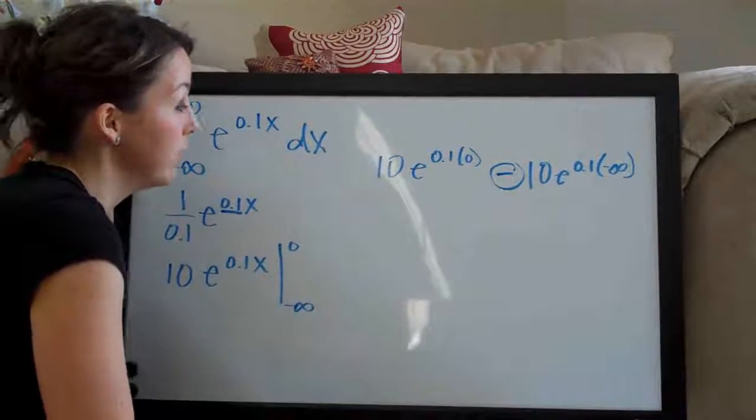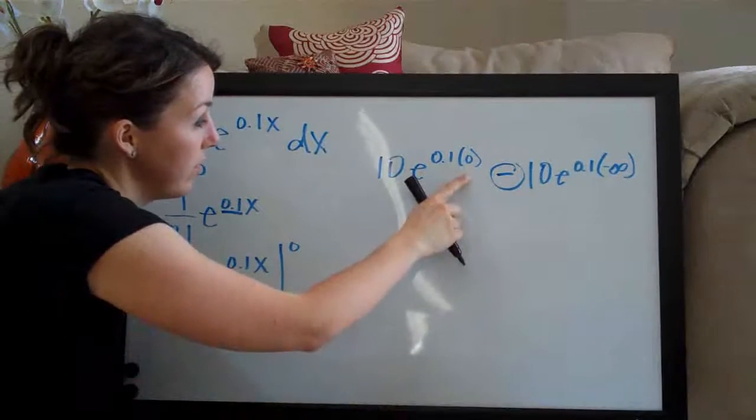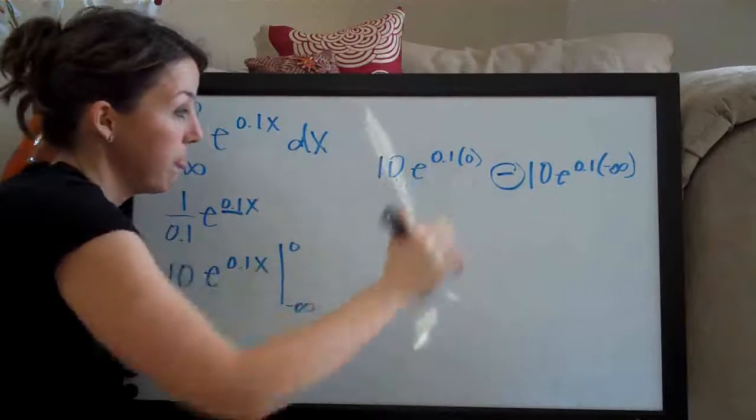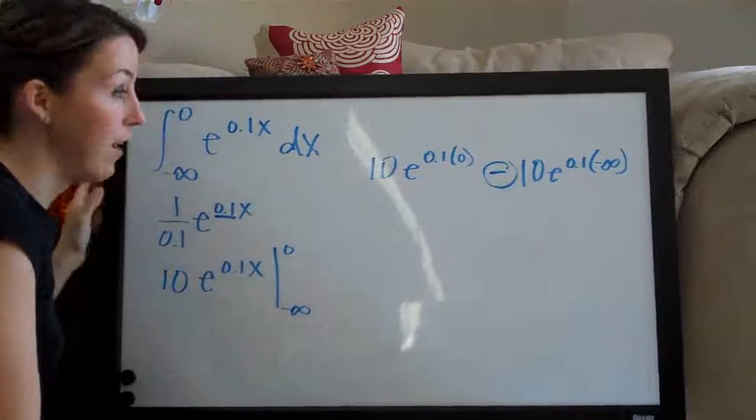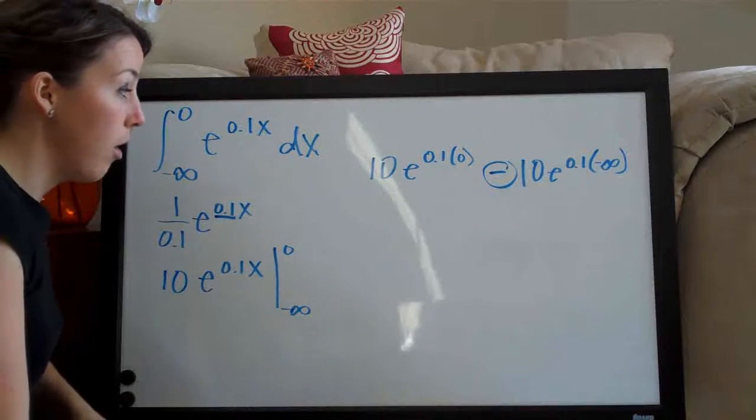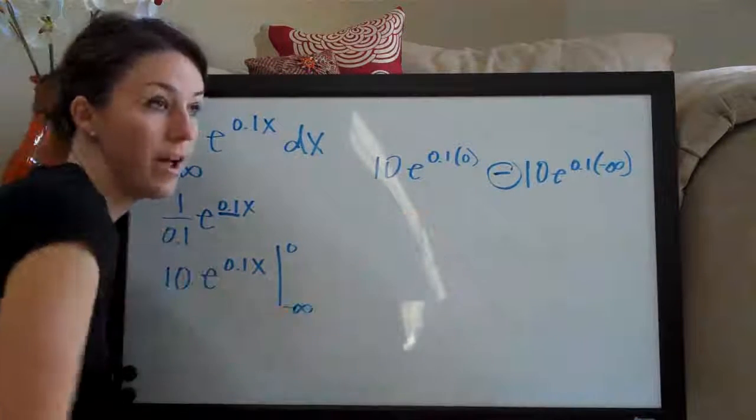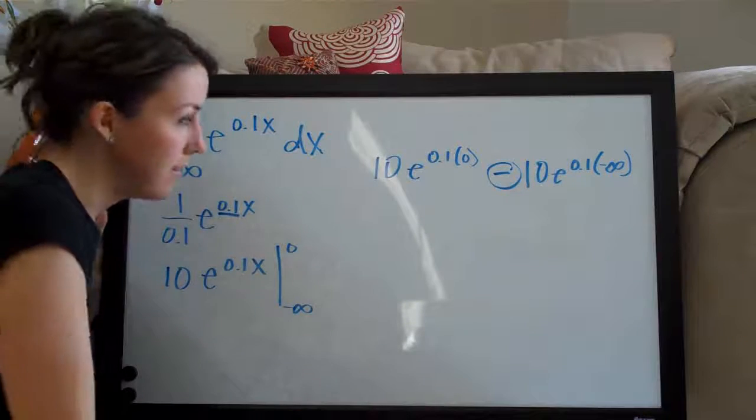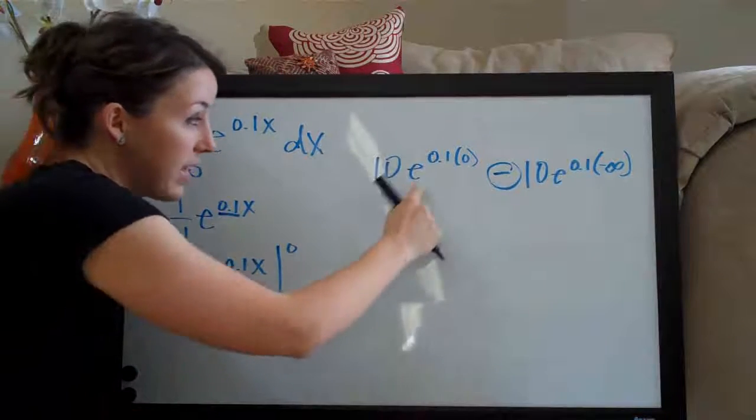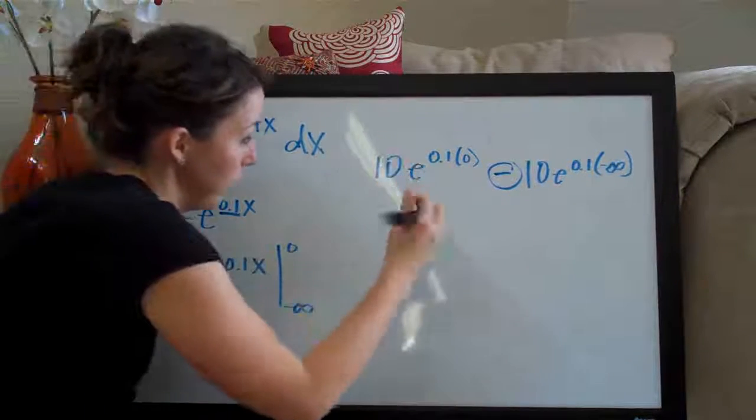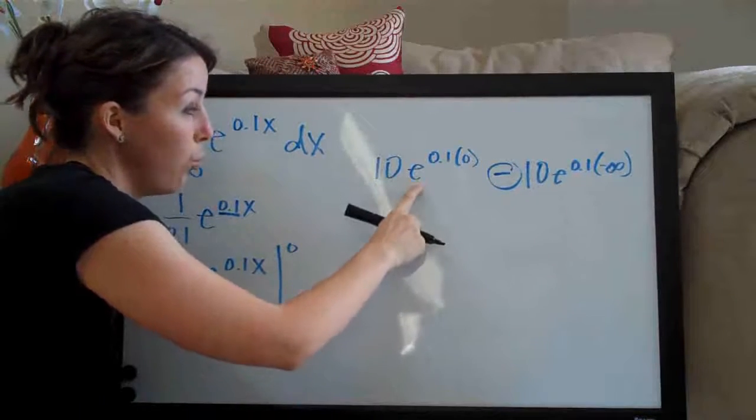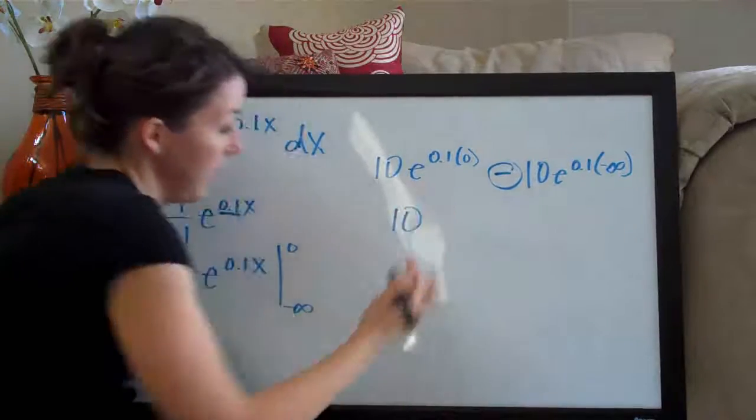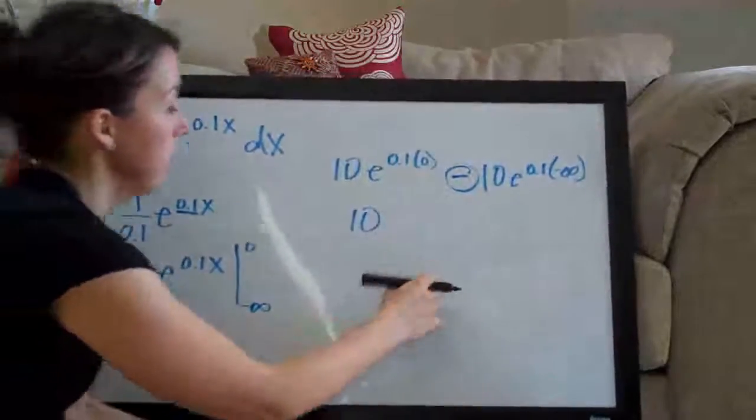And then all you have to do is evaluate. So what you end up with here, 0.1 times zero is of course just zero. Anything raised to the zero power at all is always one. So it doesn't matter if it's x to the zero, if it's 20 to the zero power or if it's e to the zero power, it's always just one. So you're going to end up with 10 times one is of course just 10. So the first term is 10 minus,